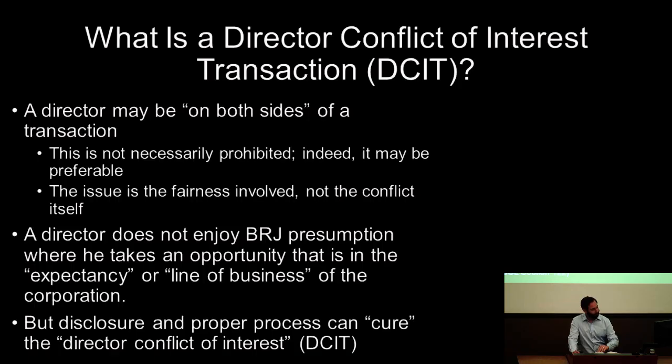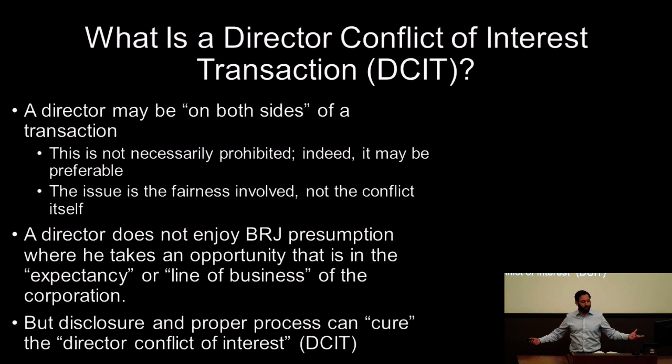There are some safe harbors so we can have some confidence about how to cleanse DCITs. We'll also talk about the corporate opportunity doctrine. A DCIT — Director Conflict of Interest Transaction — is when a director stands on both sides of a given transaction. This is not necessarily prohibited; in fact, it may be beneficial. An example: Andreessen Horowitz, a venture capital firm, invests in both Uber and Lyft — so one of these companies now has a director on their board from the VC firm.